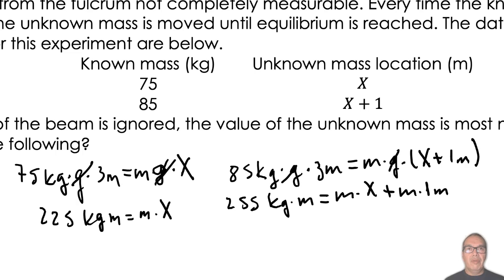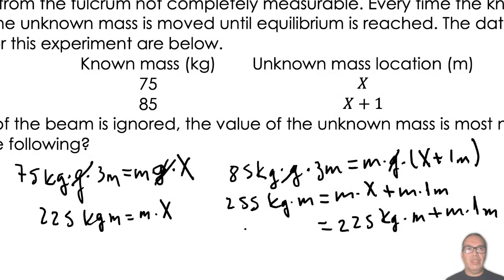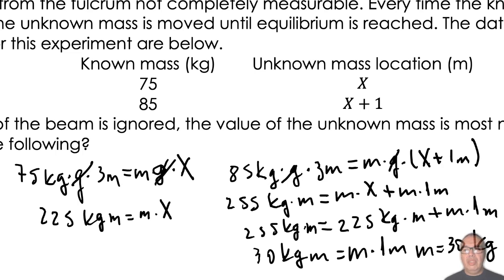The first term on the right-hand side is equal to 225 kilogram meters as shown by the first equation. Moving things around, we have that 30 kilogram meters is equal to M times 1 meter, so M equals 30 kilograms. Your answer is option C.